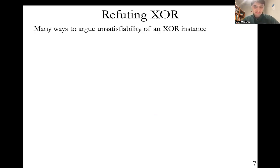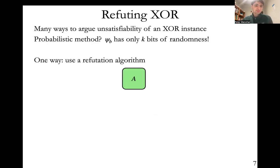How do we show unsatisfiability of this XOR instance? There are many ways to argue unsatisfiability in general, and you might try to do something very simple, like the probabilistic method. The psi_b has k bits of randomness coming from the message b. But the thing is, k is probably less than n, right? So you only have sublinear number of bits of randomness, but you're trying to union bound—if you use the probabilistic method, you're trying to union bound over all 2^n assignments X. So you don't have enough bits of randomness to do this, so this is not going to work.